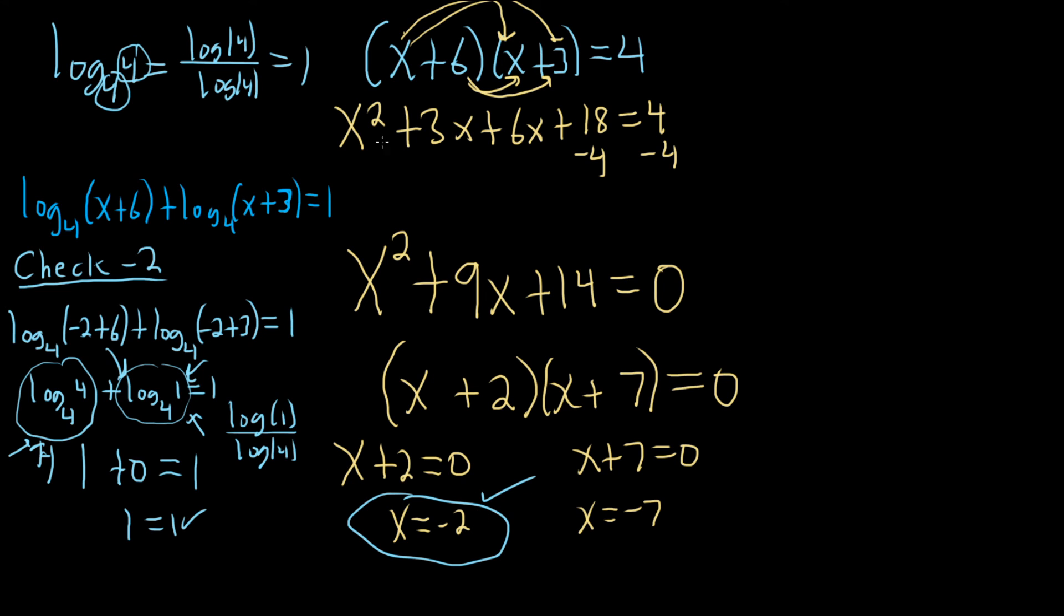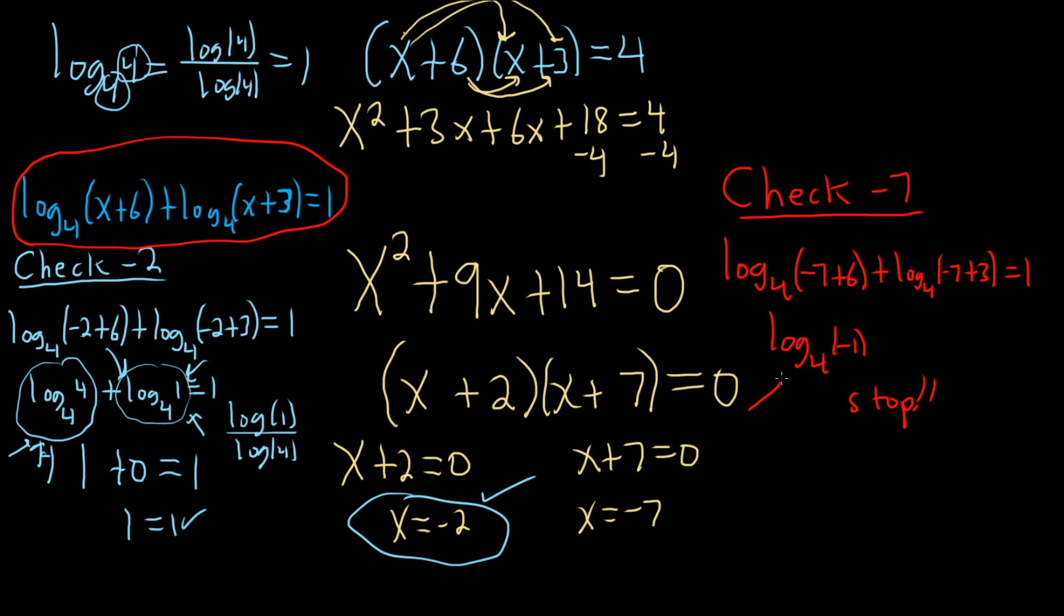So now we just have to check negative 7. So let's check negative 7. So we're going to plug it back into this equation here. So we have log base 4 of negative 7 plus 6 plus log base 4 of negative 7 plus 3. And that's equal to 1. So it becomes log base 4 of negative 1. Okay, and then we stop. And the reason you stop is because this is no good. You cannot take the log of a negative number.